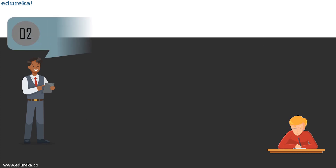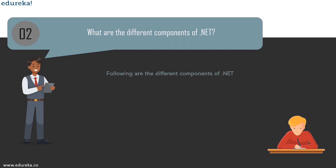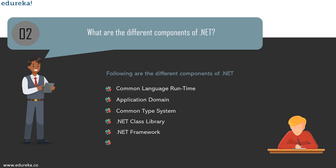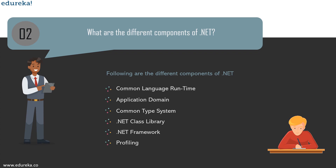The next question is: what are the different components of .NET? The components are Common Language Runtime, Application Domain, Common Type System, .NET Class Library, .NET Framework, and Profiling. The CLR is the virtual machine component of Microsoft's .NET framework — it manages execution of .NET programs, and just-in-time compilation converts managed code (compiled intermediate language code) into machine instructions executed on the CPU.